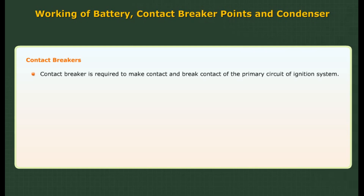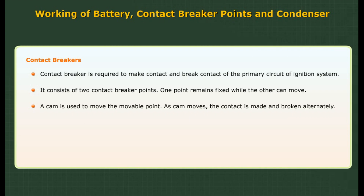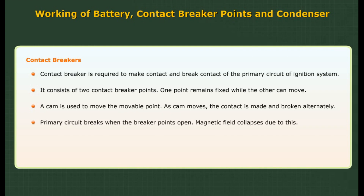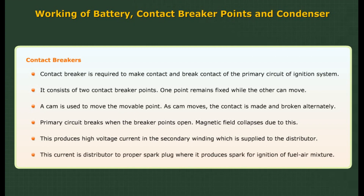Contact breakers are required to make and break contact in the primary circuit of the ignition system. They consist of two contact breaker points — one remains fixed while the other can move. A cam is used to move the movable point, making and breaking contact alternately. When the breaker points open, the primary circuit breaks, the magnetic field collapses, and this produces high voltage current in the secondary winding, which is supplied to the distributor and then to the appropriate spark plug to produce the spark for ignition of the fuel-air mixture.